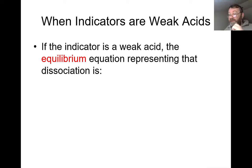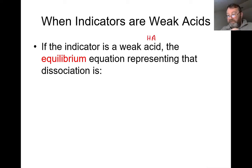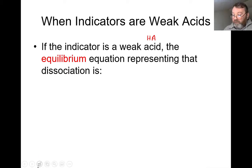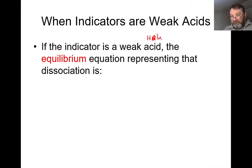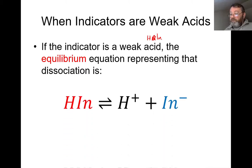If the indicator is a weak acid, the equilibrium equation representing that dissociation uses the generic symbol for an acid, HA, but I'm going to change the formula to HIN — that's just an acidic indicator. What that will do is break up into its ions of H+ and IN-. The equilibrium will be way back on the left-hand side because they don't dissociate very well, but it is a dynamic equilibrium, which means I can alter the position of equilibrium.